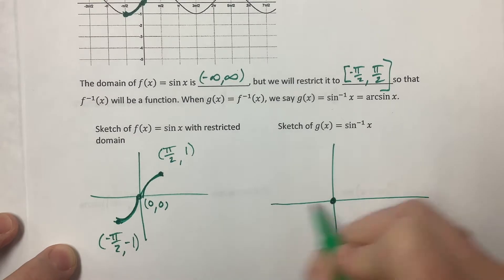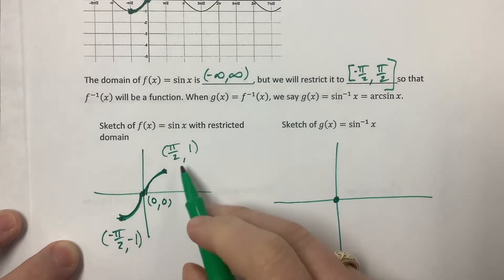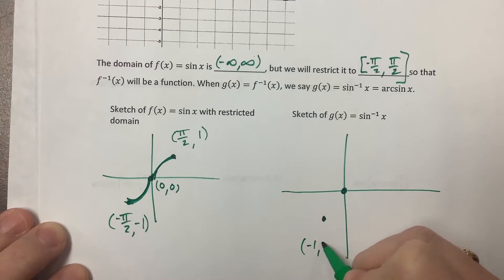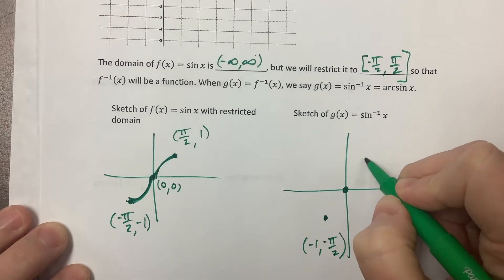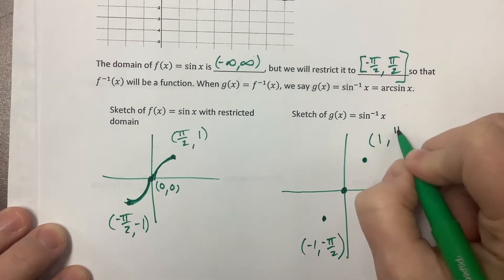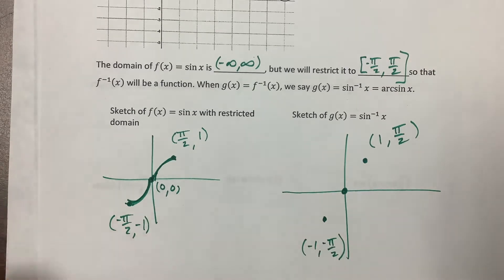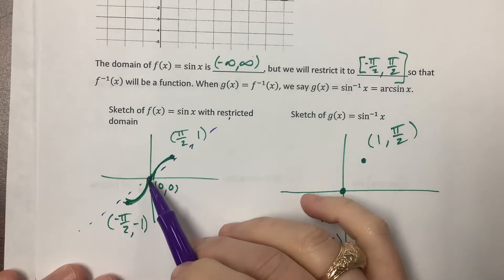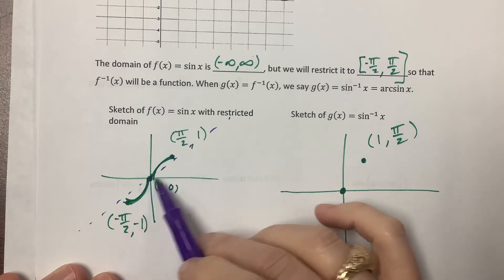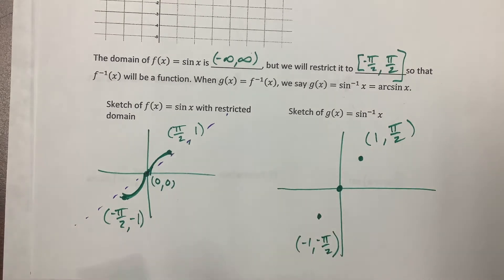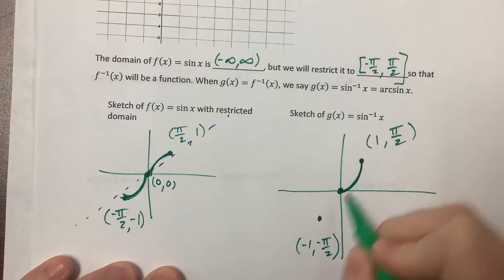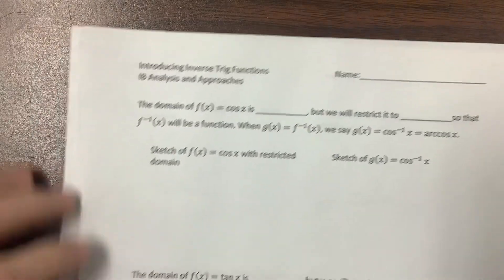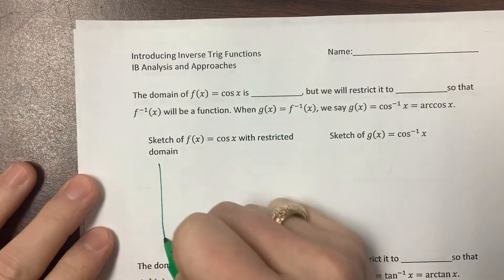When I take the inverse I switch my x's and y's. Zero zero stays zero zero, but negative pi over 2, negative 1 becomes negative 1, negative pi over 2. And pi over 2, 1 becomes 1, pi over 2. If I reflect over the line y equals x — which is what the inverse does — the concavity changes: this piece becomes concave up and this piece becomes concave down.